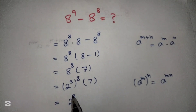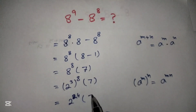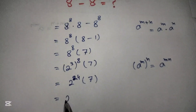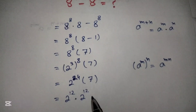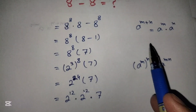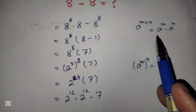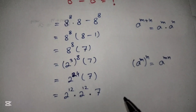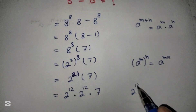According to this identity we rewrite this as 2 raised to power 3×8, which is 2 raised to power 24, into 7. We then rewrite 2 raised to power 24 as 2 raised to power 12 into 2 raised to power 12, using the first identity a raised to power m+n equals a raised to power m into a raised to power n, to simplify this further.